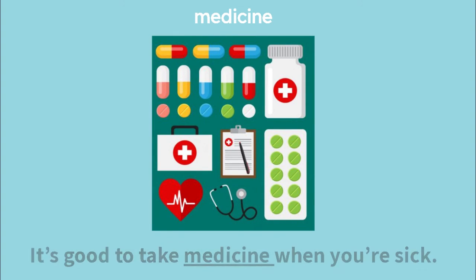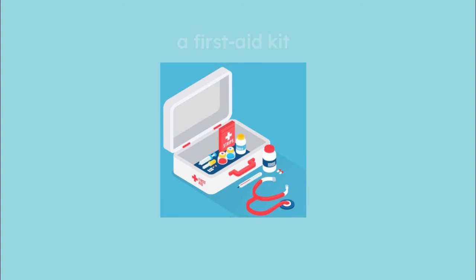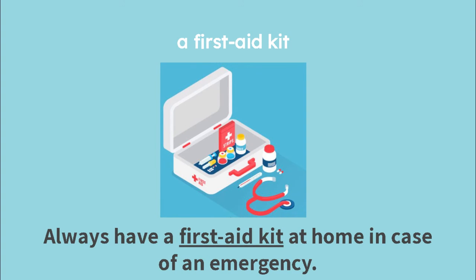Here we have different pills and different treatments — medicine. It's good to take medicine when you're sick. Let's spell medicine: M-E-D-I-C-I-N-E. Medicine. And this is a pack of medicine — you have different types for different situations. It's a first aid kit. Always have a first aid kit at home in case of an emergency. Let's spell it: A, F-I-R-S-T hyphen A-I-D, K-I-T. A first aid kit.